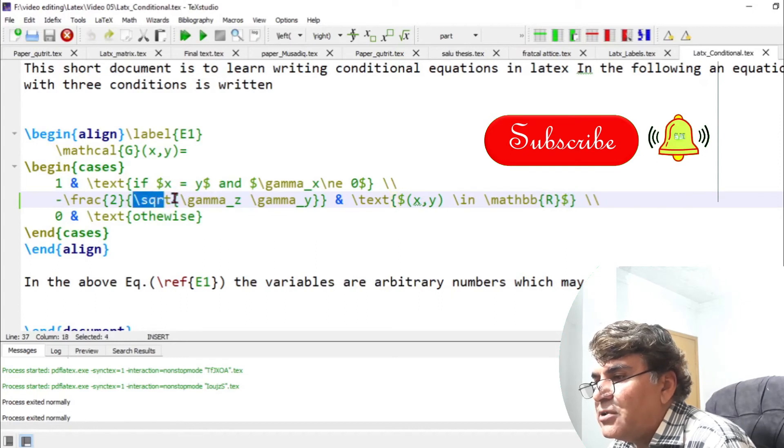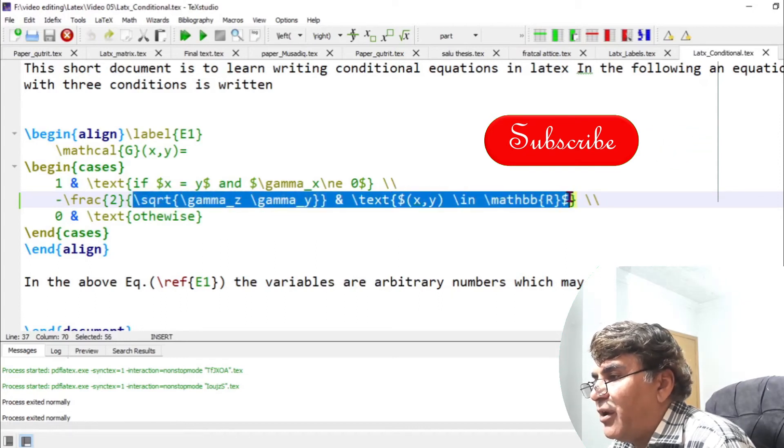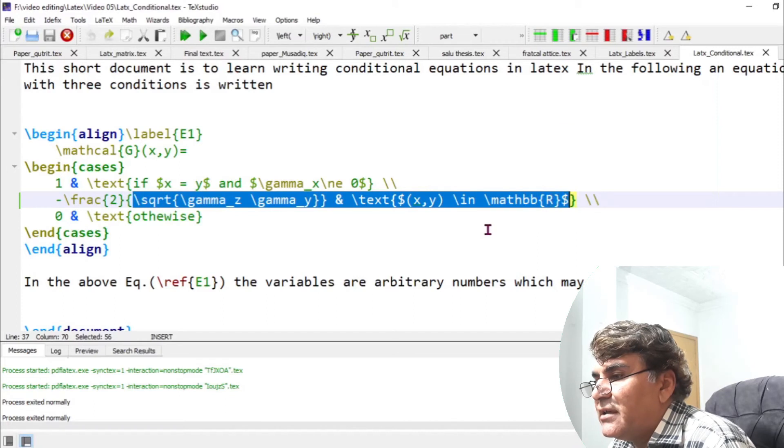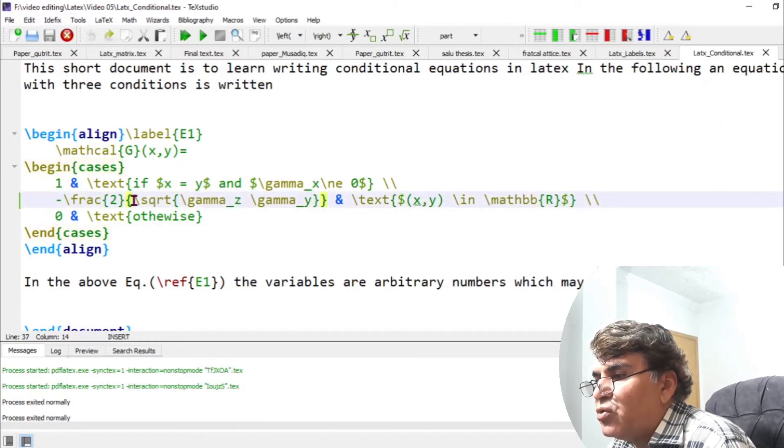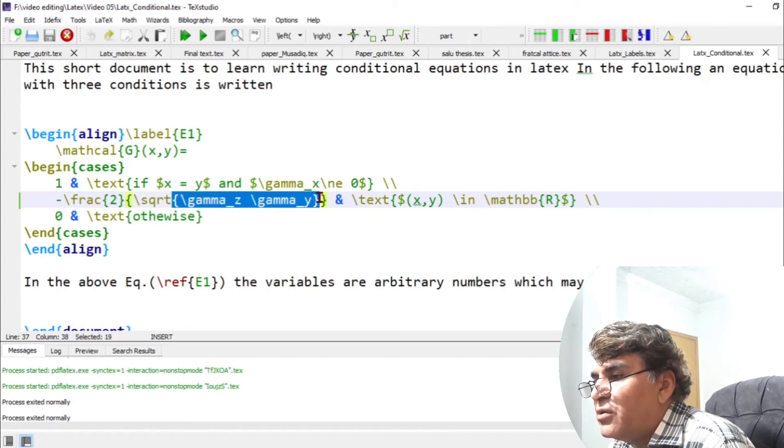This whole term is the denominator which I am writing inside the curly brackets. Then I can introduce the square root command by backslash sqrt and anything that comes under the square root should be written inside the curly brackets which I am writing over here.